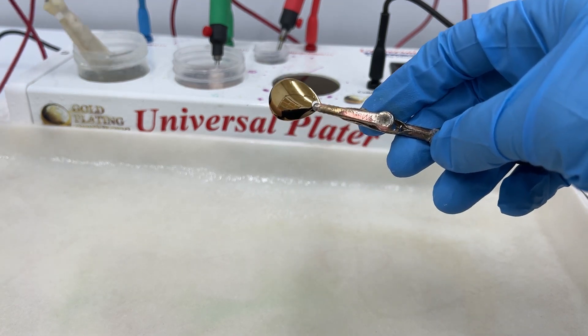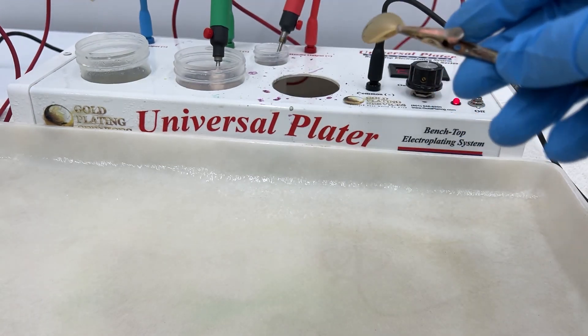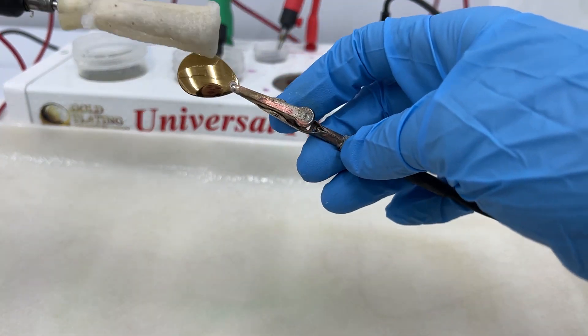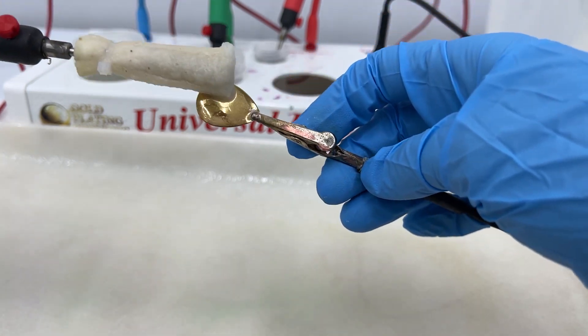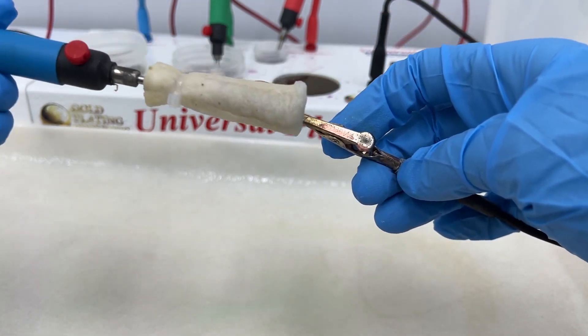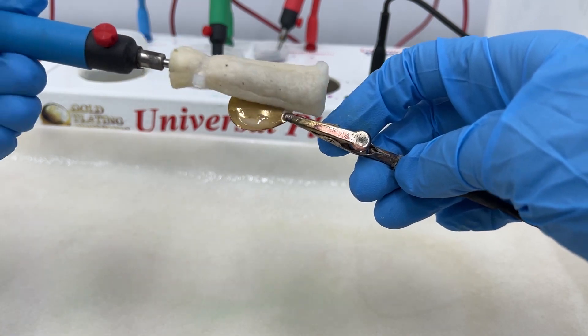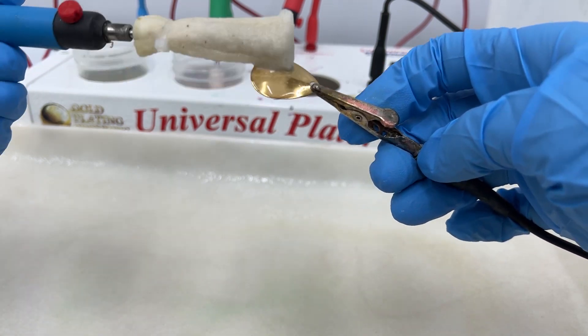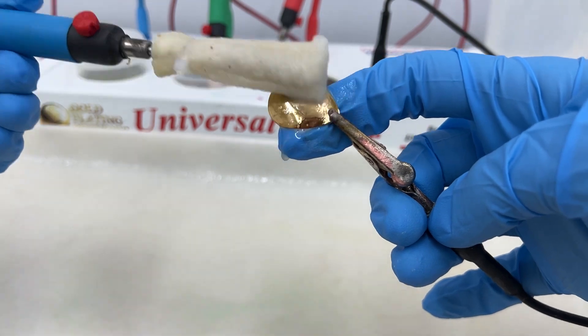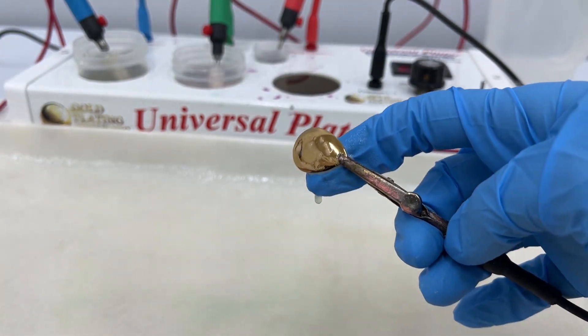So we're going to first start off at 6 volts on our universal plater and be using our ElectroClean. You can see that's working with those bubbles. Make sure you get the whole area and you'll rinse it off.